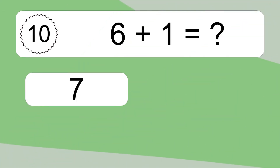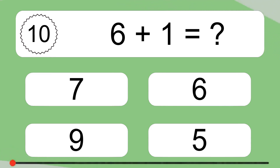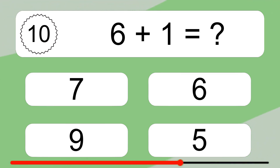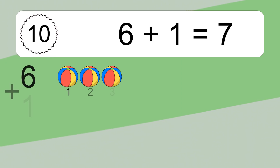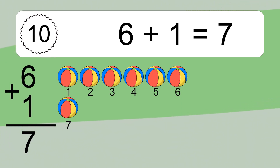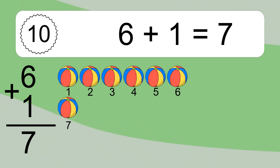6 plus 1 equals what? 6 plus 1 equals 7. Let's count it. 1, 2, 3, 4, 5, 6, 7.